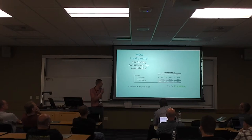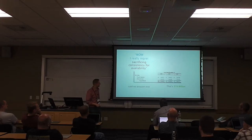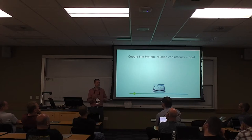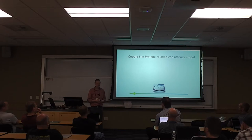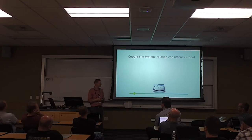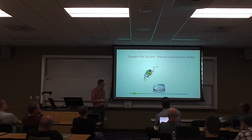And it pays off — $34 billion with a B in revenue in 2013. Google is another leader in relaxing consistency and championing this model. Has anyone read any Google papers — Big Table or GFS, the Google File System? Those are really fun papers. In all their papers, they all have the same model: here's how we relax consistency to meet our goals.